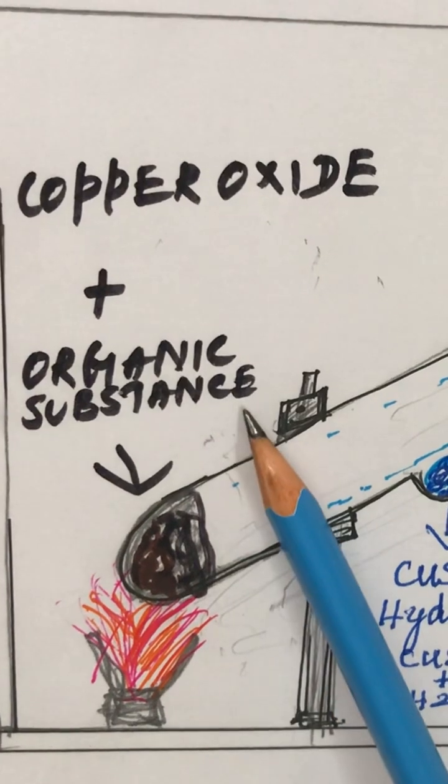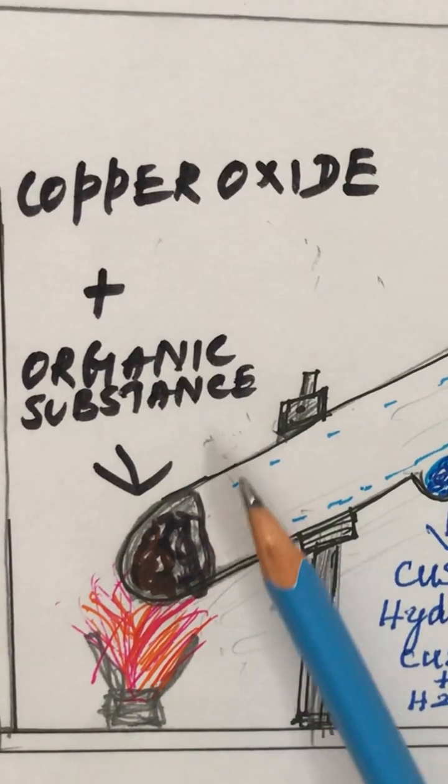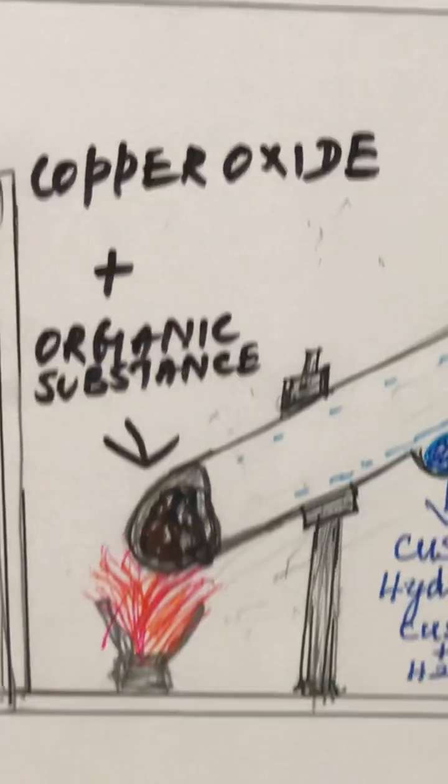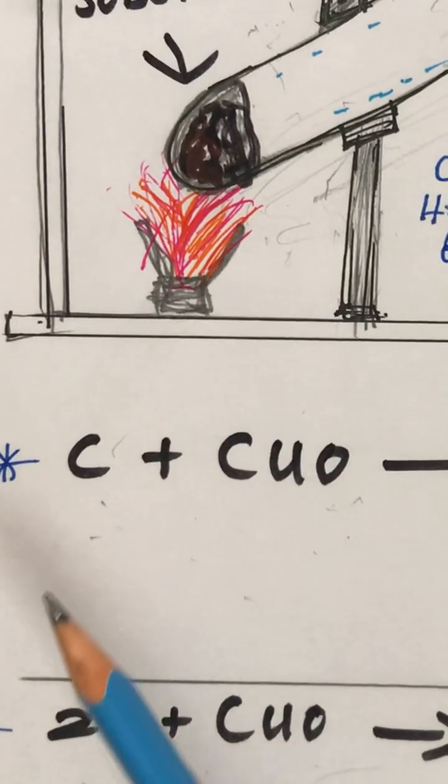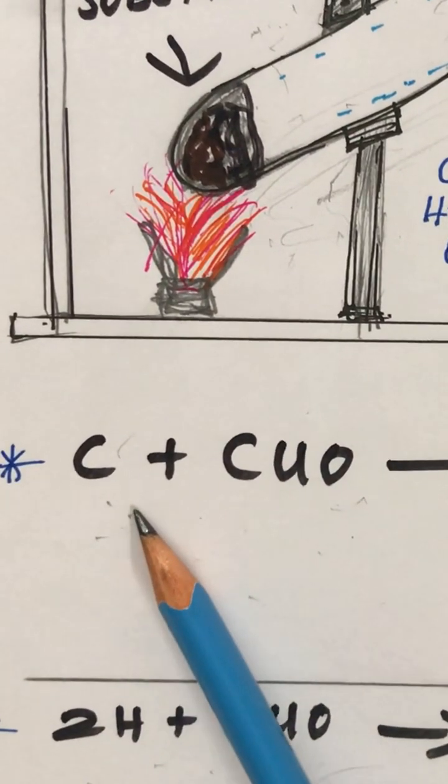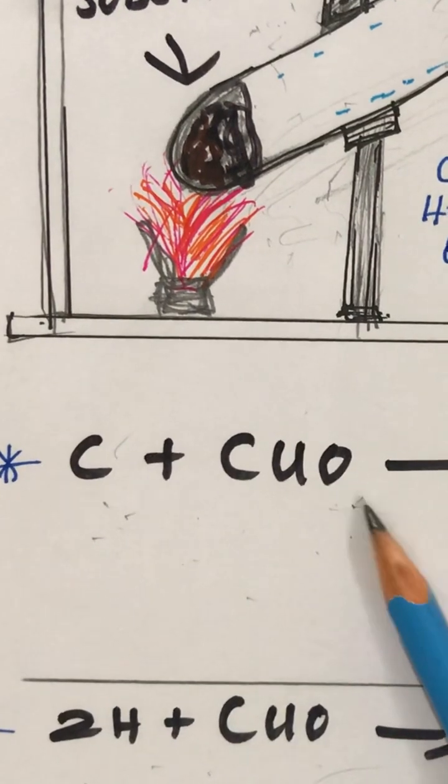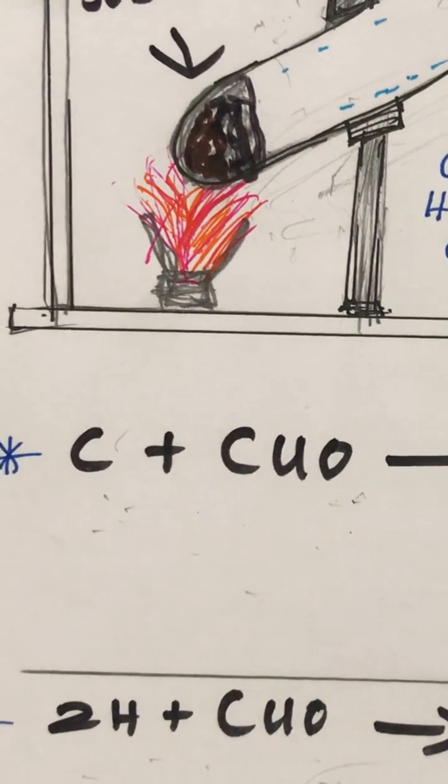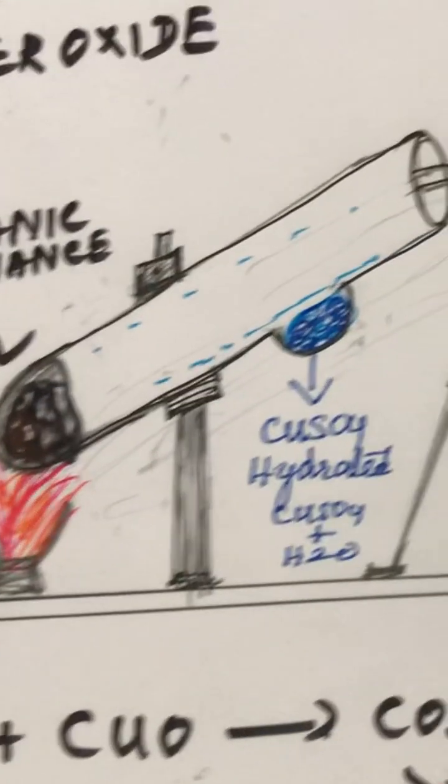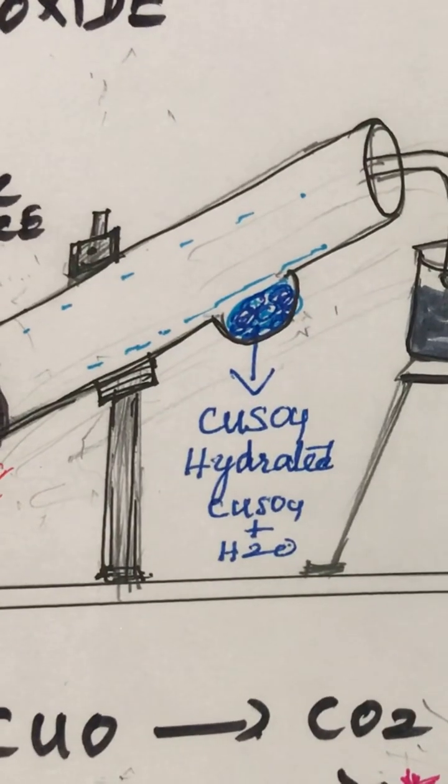If an organic compound contains carbon, it burns with the copper oxide giving carbon dioxide. For example, the carbon present in an organic compound reacts with the copper oxide and produces carbon dioxide. The evolving carbon dioxide is passed through the lime water.